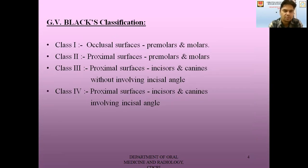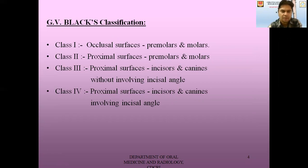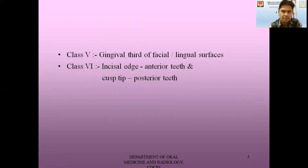Coming to the classification, the most common classification used in dentistry is J.P. Black's classification. He classified caries into six classes. Class one is occlusal surface caries on premolars and molars. Class two is proximal surface caries on premolars and molars. Class three is proximal surface caries on incisors and canines without involving the incisal angle. Class four is proximal surface caries on incisors and canines with involvement of the incisal angle. Class five is caries on the cervical third of the facial and lingual surfaces. Class six is caries of the incisal edge of anterior teeth and on the cusp tip of posterior teeth.